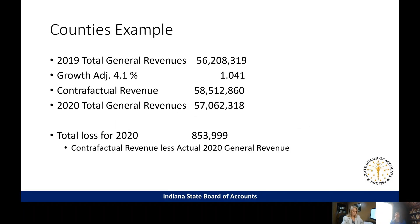Taking the information from those documents: for 2019, total general revenues were $56,208,319. Applying the 4.1 percent growth adjustment — multiplying by 1.041 — the counterfactual revenue is $58,512,860. For 2020, actual total general revenues were $57,062,318. Comparing the 2020 actual to the counterfactual of $58,512,860, there is a loss of $853,990. That would be the cap on how much of the funds could be used due to a revenue loss in 2020.